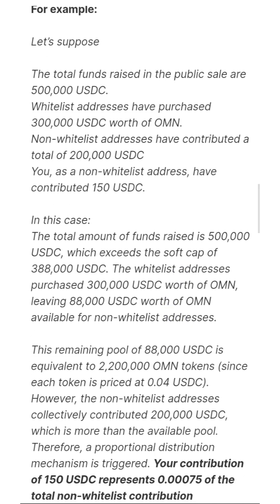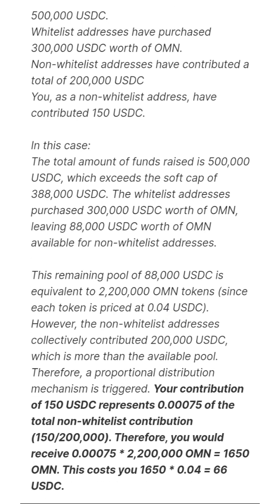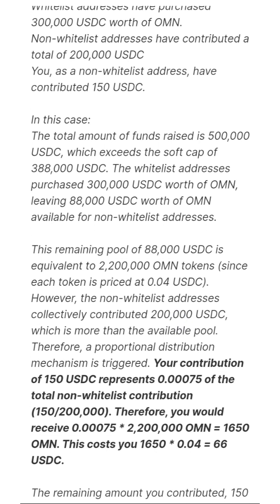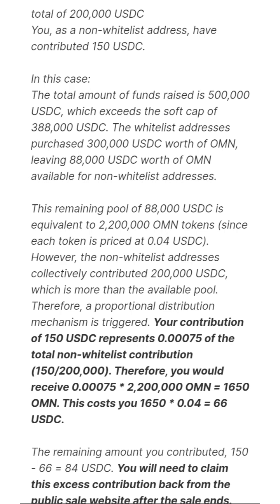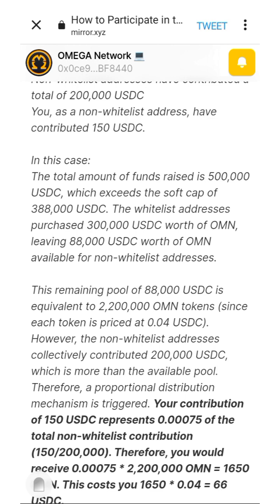For example, suppose the total funds raised in the public sale are 500,000 USDC. Whitelist addresses have purchased 300,000 USDC worth of OMN, and non-whitelisted addresses have contributed a total of 200,000 USDC. You, as a non-whitelisted address, have contributed 150 USDC. At a price of 0.04 USDC per token, with 150 USDC you would normally get 3,750 OMN tokens.